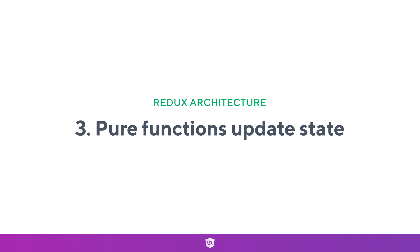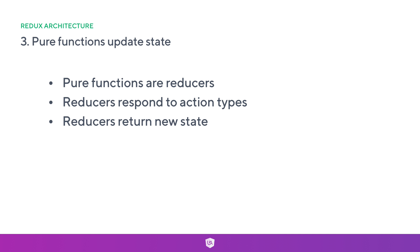The third principle is that pure functions update the state. This is really key because a pure function is so easy to test — it has an input, and given the same input it will always return the same output. Think of a very simple example: a function called sum which accepts a and b as arguments and returns a plus b. This is a simplistic example of what a pure function does — it doesn't mutate properties or access properties outside of that given function. We'll be learning this in more detail as we continue through the course.